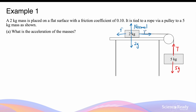It is worth noting that the two tension forces acting on the 2kg mass and the 5kg mass, although in different directions, are equal in magnitude because the two masses are tied together by the same rope, so they experience the same tension. Since the two masses are tied together by the same rope, they will experience the same acceleration. In other words, we can treat the two masses as a single mass that weighs 7kg.